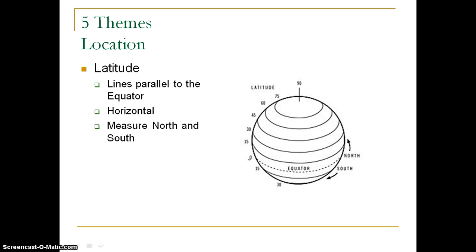Lines of latitude are lines that run parallel to the equator. When we talk about degrees of north and south latitude, it refers to whether a location is north or south of the equator — for example, 15 degrees north, 30 degrees north, or 15 degrees south. We call them parallels because they run parallel to the equator. Even though they run east to west, they measure degrees north and south of the equator.